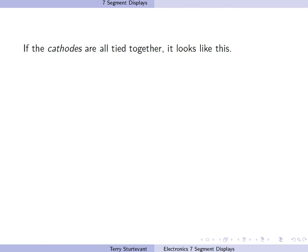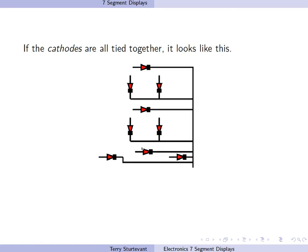If the cathodes are all tied together, it looks like this. This is called a common cathode display.